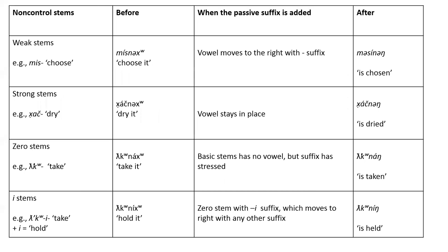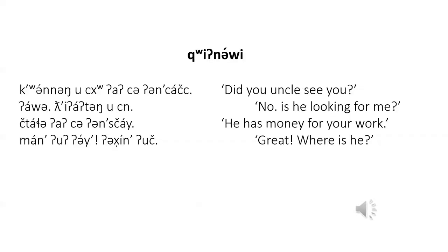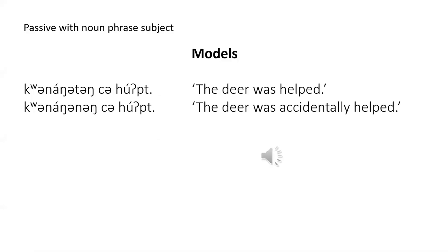So you've got your weak stem before, when the passive suffix is added, and then your word. And the Kwanawai for this lesson. And the last part for this video — passive with noun phrase and subject. When a noun phrase is used with a passive verb, it is translated as undergoing the action. Let's listen to these model sentences: The deer was helped. Kwanawai for passive with noun phrase subject.